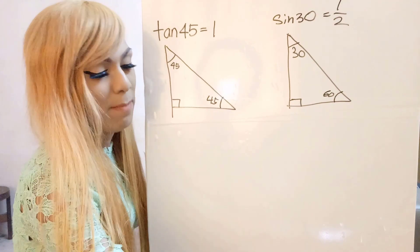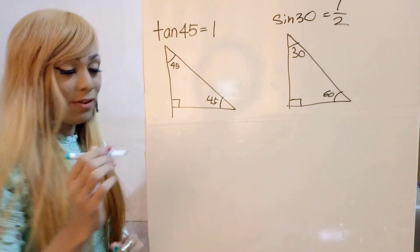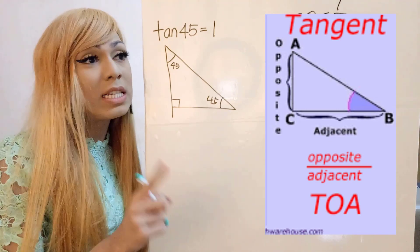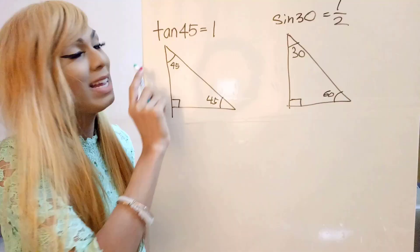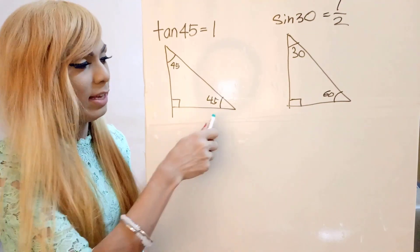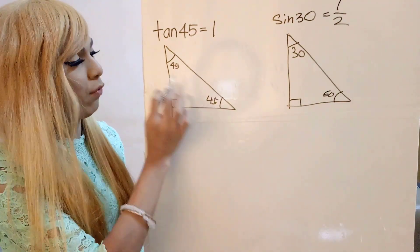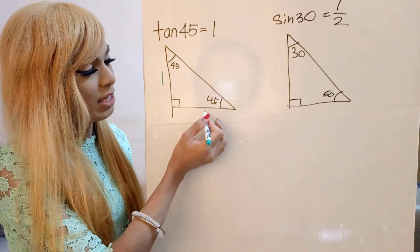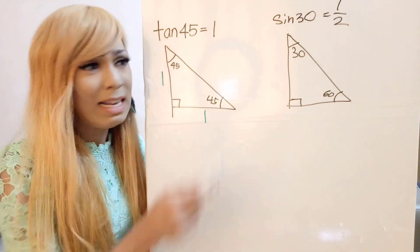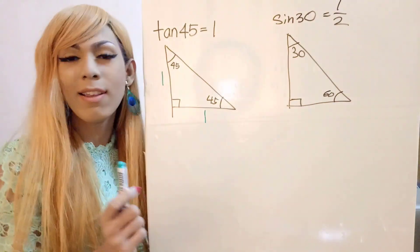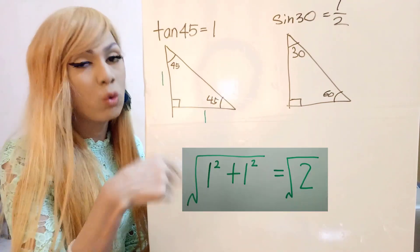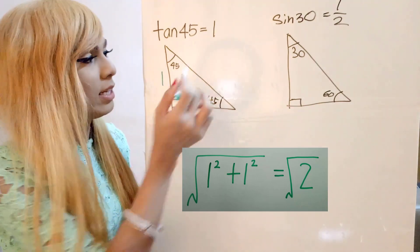So just now we remember that tangent 45 is 1, right? So remember tangent is opposite over adjacent. Tangent 45 is equivalent to 1 which means it's also equal to 1 over 1. So in this case, for the opposite is 1 and the adjacent is also 1. So we can easily find the length of hypotenuse by using Pythagorean theorem. This is because 1 square plus 1 square, square root of the answer, we gonna get square root 2.